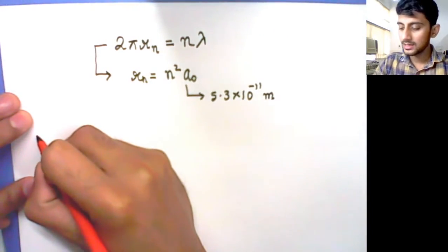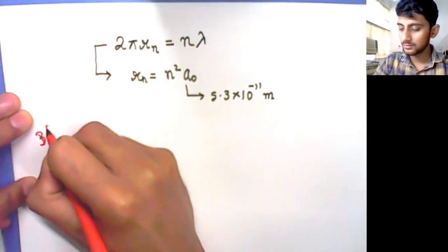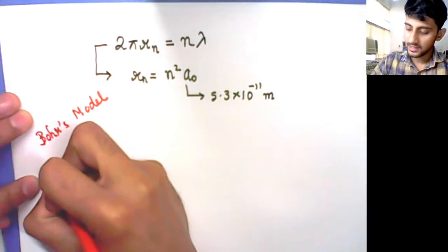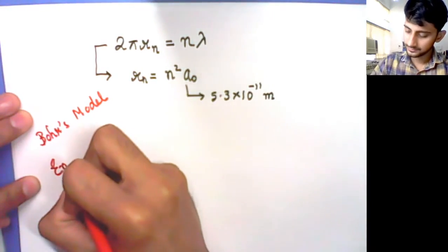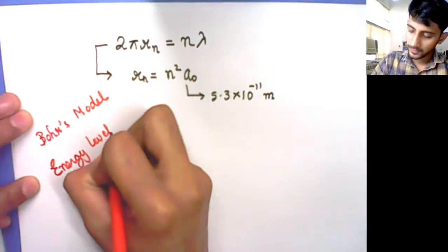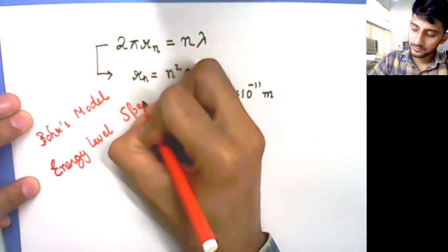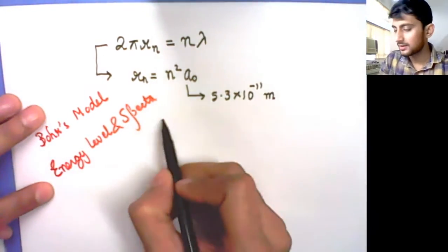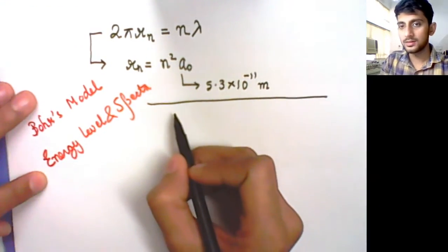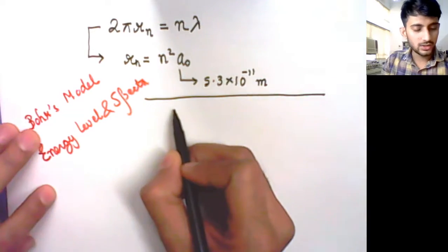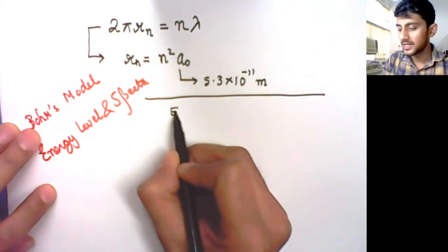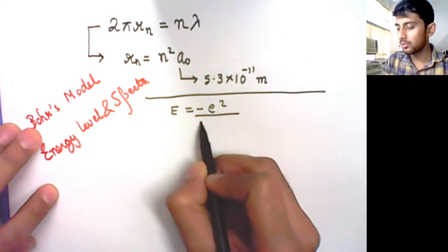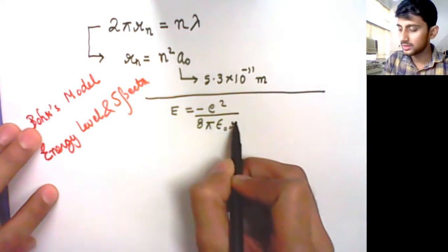Now we have to learn how the Bohr model explains energy levels and atomic spectrum. We started with the total energy of the electron, which is given by negative e-squared upon 4π ε₀ r.